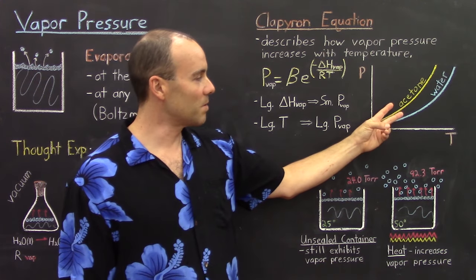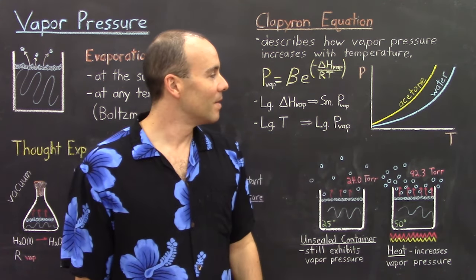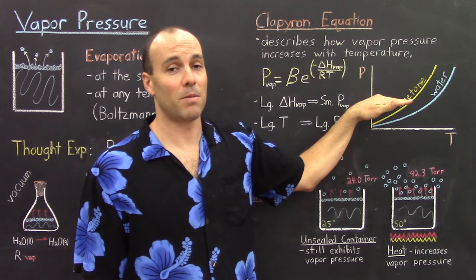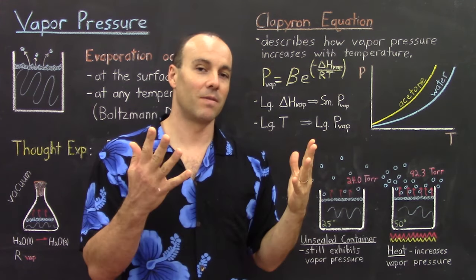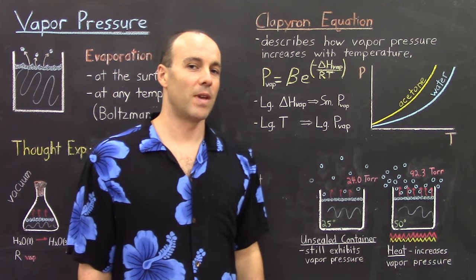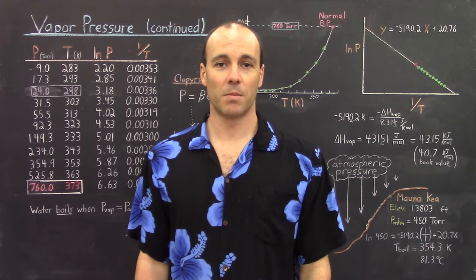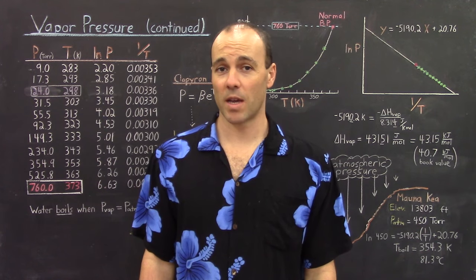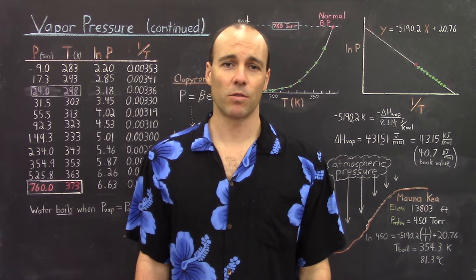Here you can see two substances' vapor pressures changing with temperature: the first is acetone, and the other one is water. What you should recognize in this plot is that at any given temperature, acetone always has a larger vapor pressure than water. Water has those strong hydrogen bonds, and it takes a lot of energy to vaporize water — it has a large ΔH of vaporization — and so water is going to have a relatively low vapor pressure compared to most other substances. As the temperature of a substance increases, so does its vapor pressure, and the Clapeyron equation tells us the relationship between the two is an exponential one, so we ought to see vapor pressure really spike up.